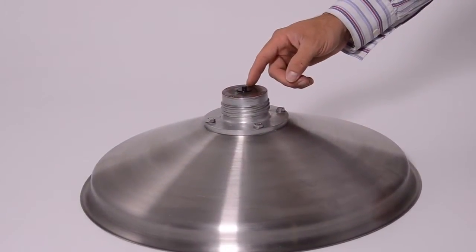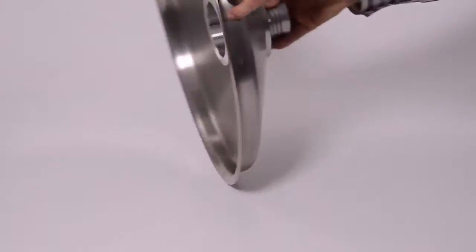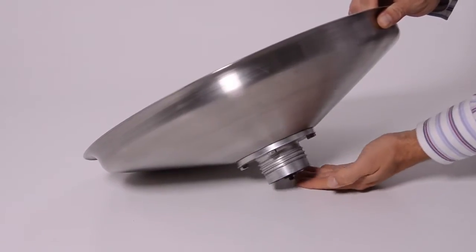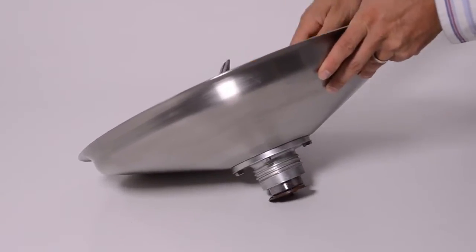To remove the bottom seal, bearings and drive shaft from the bearing seat, tilt the bowl so that the bearing seat is not resting on the table and begin tapping the top of the drive shaft with a hammer until it comes out.